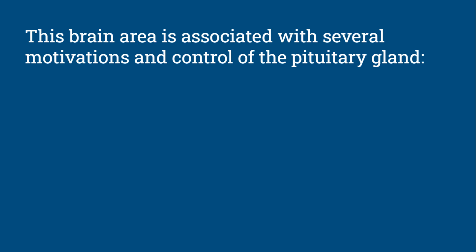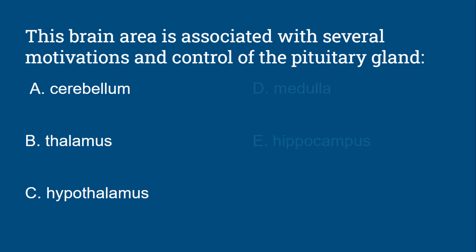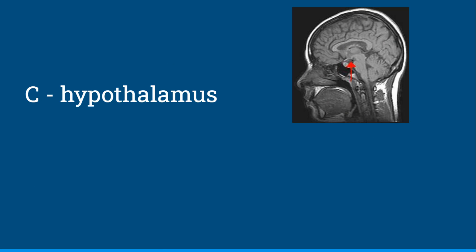Question 1: This brain area is associated with several motivations and control of the pituitary gland. Is it the cerebellum, the thalamus, the hypothalamus, the medulla, or the hippocampus? And the answer is C, the hypothalamus.